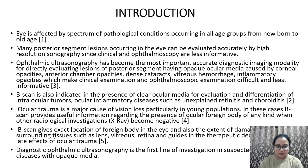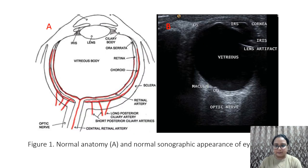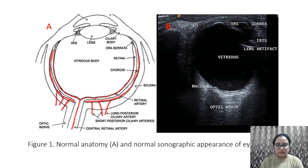Diagnostic ophthalmic ultrasonography is a first-line investigation in suspected diseases of opaque media. In this image, we can see the normal anatomy of the eyeball and the normal sonographic appearance of the eyeball.